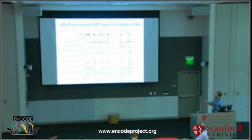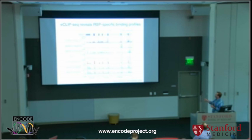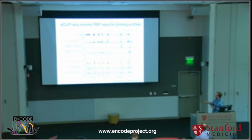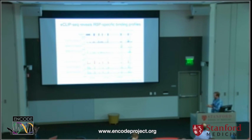We're able to classify different proteins as having different types of binding profiles. For instance, PRP8, which is a core component of the spliceosome, tends to bind to five prime splice sites preferentially, whereas another spliceosome protein, U2AF2, binds preferentially to three prime splice sites. There are proteins such as RBFOX2 which binds to intronic sequences, IGF2BP1 which binds to three prime UTRs, and FXR1 which binds to coding exons. We can now categorize these proteins into these different binding profiles.